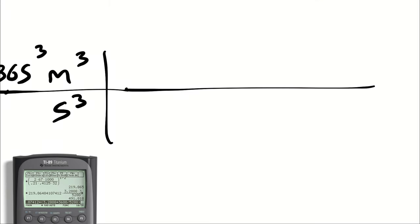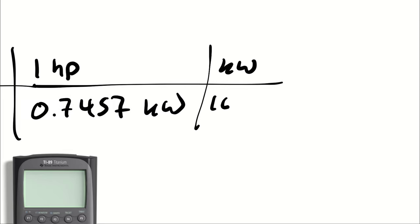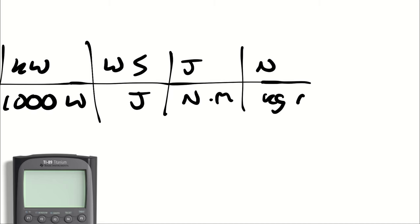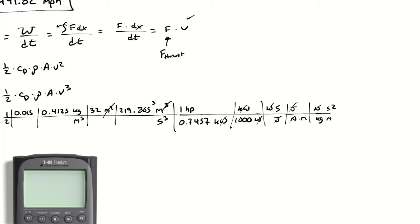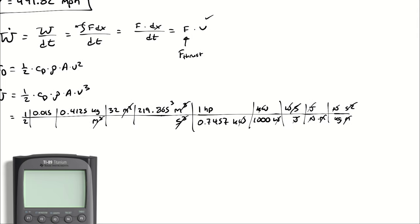I will start by recognizing that a horsepower can be expressed as 0.7457 kilowatts or 550 feet pound-force per second. One horsepower, let's go with the kilowatt conversion this particular time. A kilowatt is a thousand watts, a watt is a joule per second, a joule is a newton meter, and a newton is a kilogram meter per second squared. Units cancel appropriately, leaving me with just horsepower.